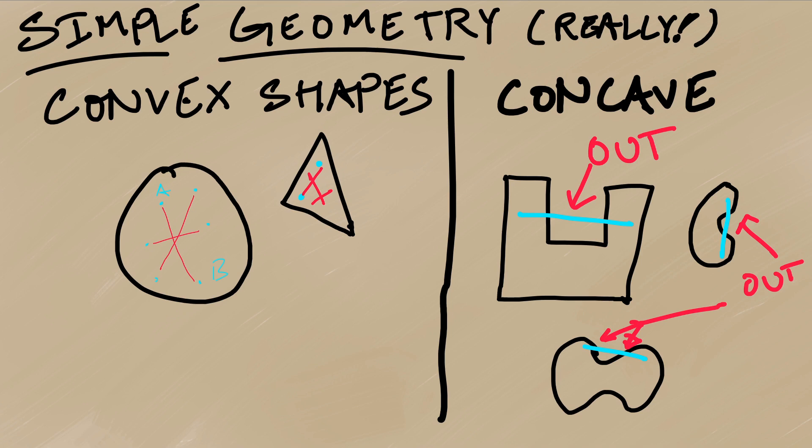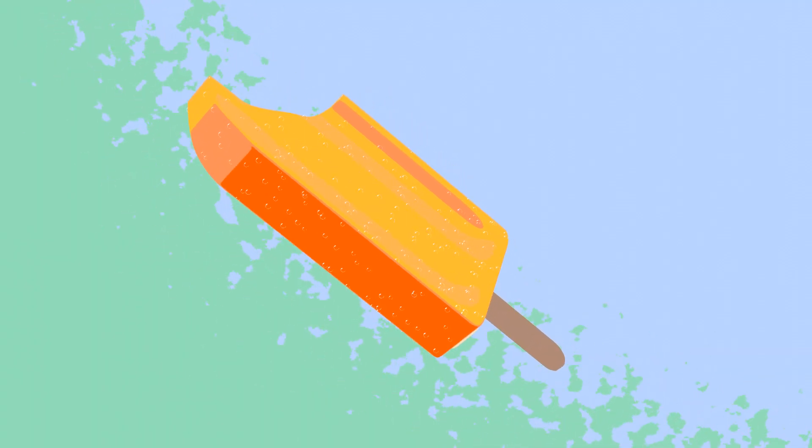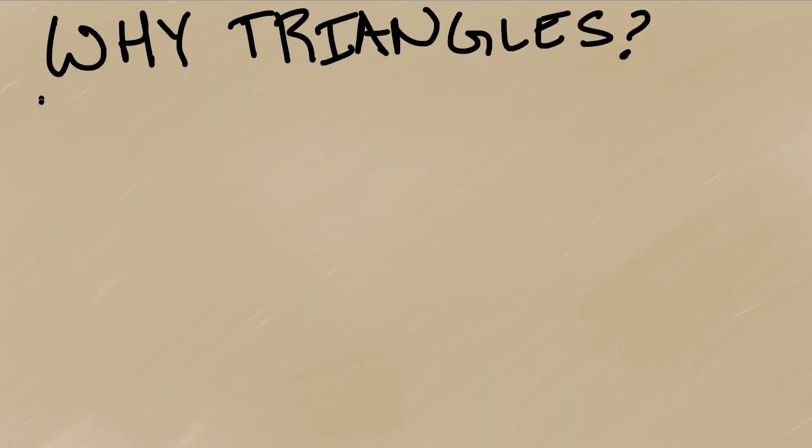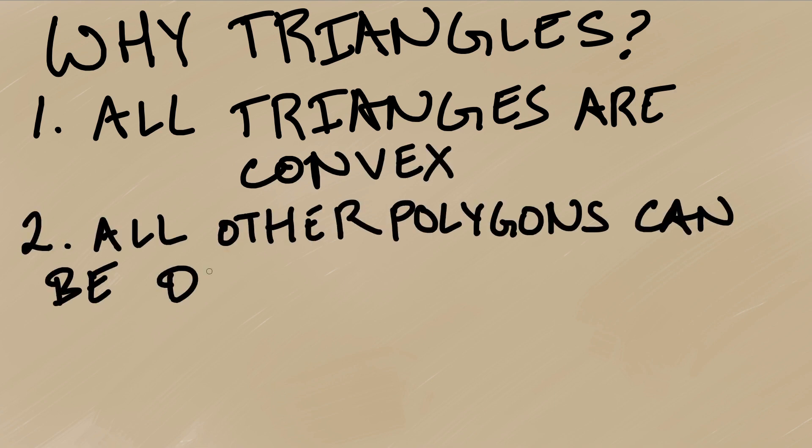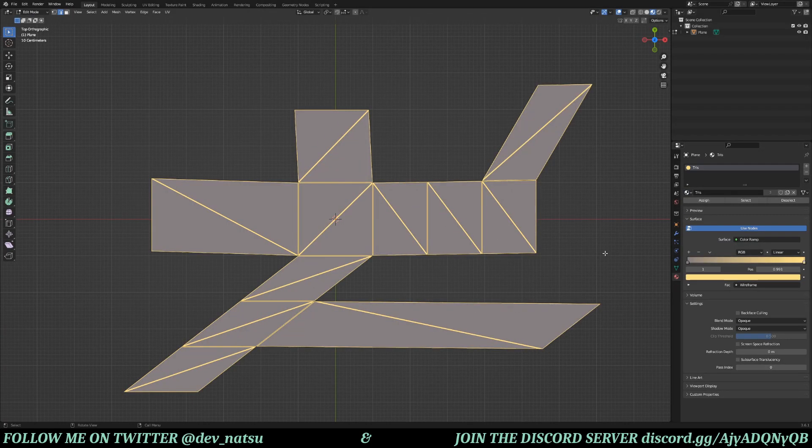Now there are infinitely many convex shapes, but we're interested in polygons. And still there are infinitely many convex polygons, but I'm going to use triangles. Why? Three reasons: one, triangles are the only polygons where all of them are convex. Two, we can decompose other polygons into triangles. And three, Blender has this nice wireframe shader so it's easier to visualize.